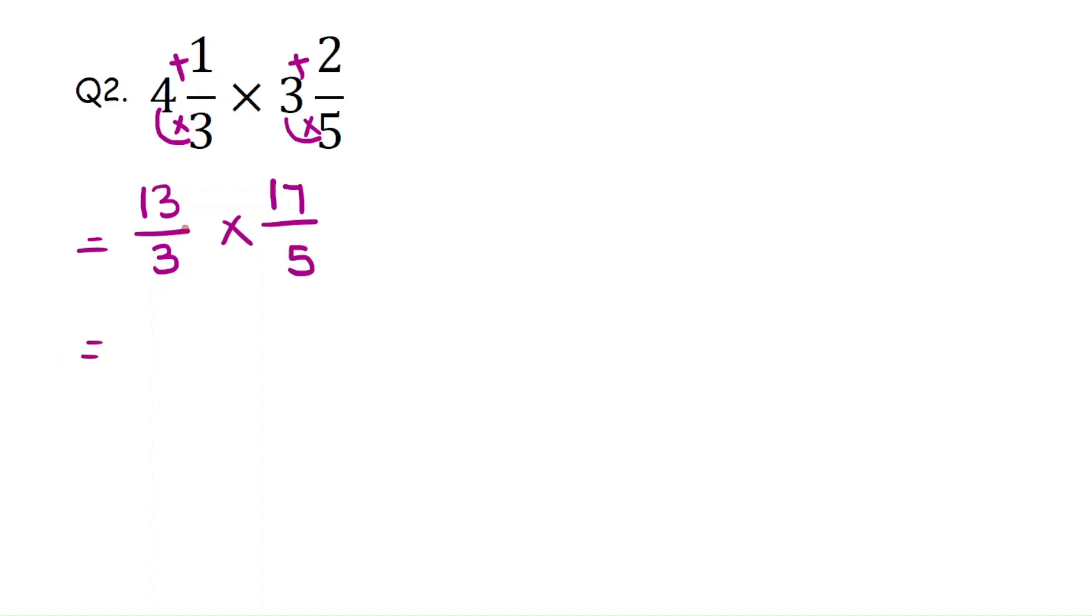So here there is no number to cancel. So you need to multiply numerator to numerator, denominator to denominator. 13 times 17 is... 3 is 51 and 5, 17, that is 21. 13 times 17 is 221. Multiply the denominators: 3 times 5 is 15.